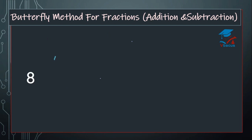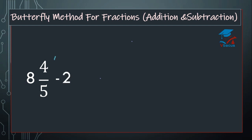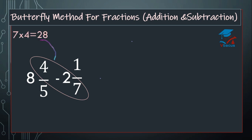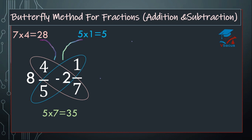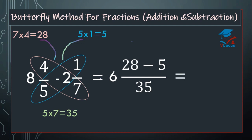Now the subtraction sum of mixed fractions: 8 and 4 over 5 minus 2 and 1 over 7. Multiply 4 and 7, that will become 28. Multiply 5 and 1, that will become 5. Multiply the denominators, that is 35. Subtract 2 from 8 for the whole numbers: 8 minus 2 is 6. Then subtract 5 from 28, giving 23. So it will become 6 and 23 over 35. Since 23 over 35 is also in lowest term, this is your final answer: 6 and 23 over 35.